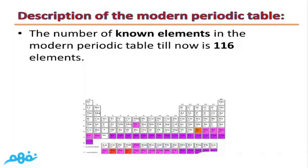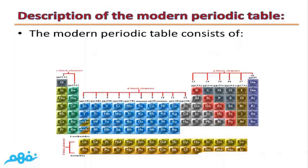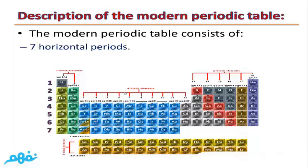The total number of known elements in the modern periodic table until now is 116 elements. Only 92 elements from them are available in the Earth's crust, while the rest are prepared artificially by scientists in labs. The modern periodic table consists of seven horizontal periods: one, two, three, four, five, six, and seven.